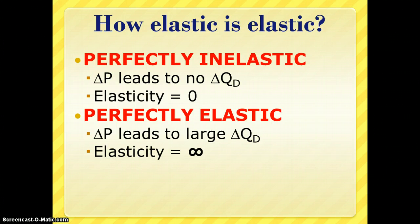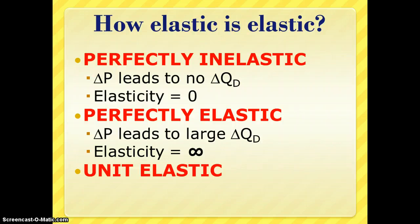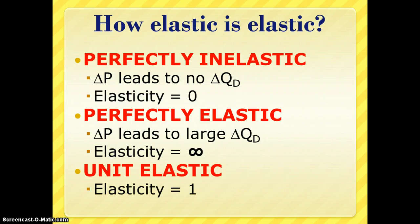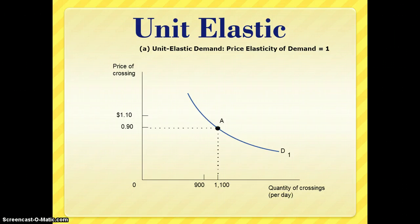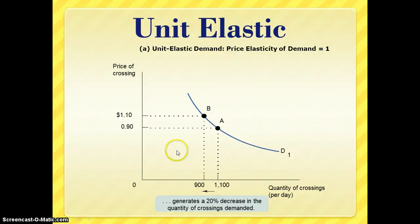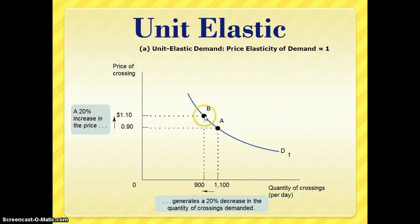A third alternative, in between the two extremes, is what we call unit elastic — where the percent change in quantity demanded equals the percent change in price, making elasticity equal to 1. Any elasticity between 0 and 1 is considered inelastic; anything between 1 and infinity is considered elastic. On the demand curve, a 20% change in quantity demanded is offset by a 20% change in price, so from points A to B we are unit elastic.